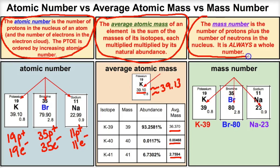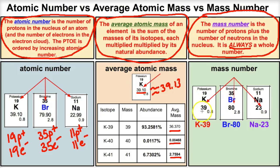The average atomic mass is a little different from the mass number. The mass number is the number of protons plus the number of neutrons in the nucleus, and it's always a whole number. Protons and neutrons come in whole numbers — there's no such thing as 0.3 protons or 0.5 neutrons. If you see a whole number on a periodic table, that's a good indication it's using mass numbers.